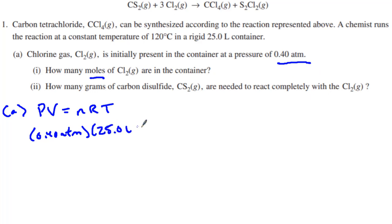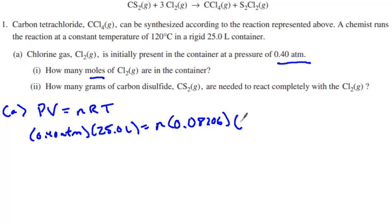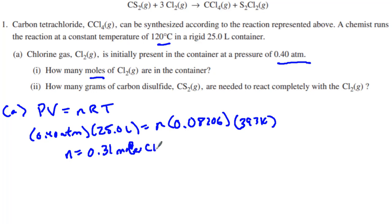We have a volume of 25.0 liters. We're trying to find the number of moles n. For R, we're going to use 0.08206, just like it says in our equation sheet, because it's liters, atmospheres, moles, Kelvin. My temperature in Kelvin has to be 393 K, because we add 273 to 120°C. So I calculate my number of moles as 0.31 moles of Cl2 gas. That was worth one point — one point for using PV = nRT. So A1 was worth one point.